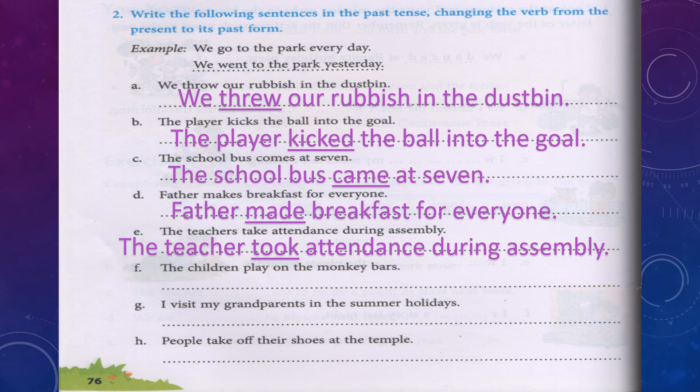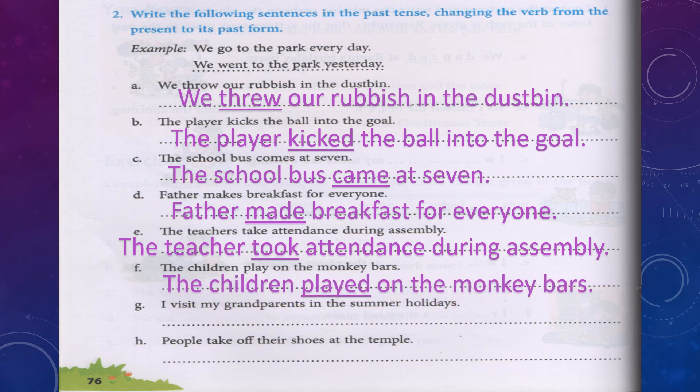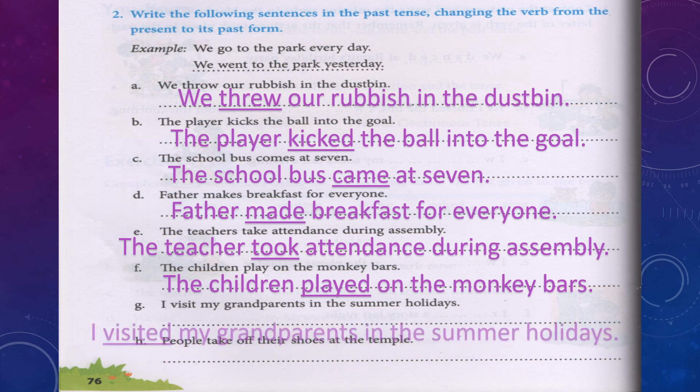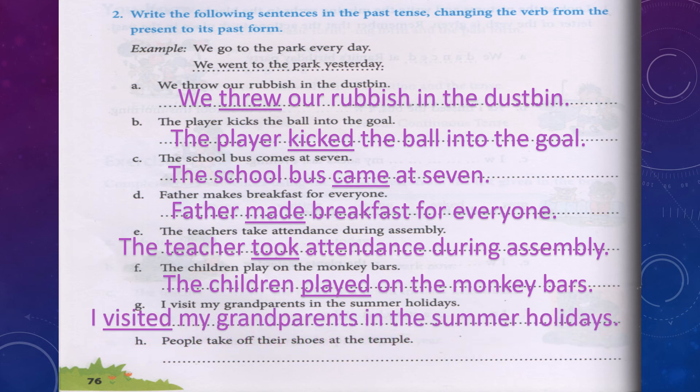F. The children play on the monkey bars. 'Play' is the verb. Past form: The children played on the monkey bars. G. I visit my grandparents in the summer holidays. 'Visit' is the verb. Past form: I visited my grandparents in the summer holidays.